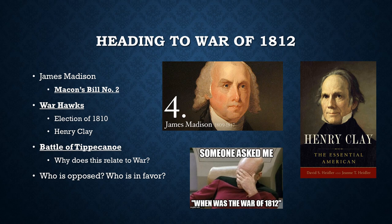Under Madison, Congress will replace the Non-Intercourse Act — which prohibited trade with Britain and France — with Macon's Bill No. 2. This reopens trade with Britain or France. Once one country promises to respect U.S. neutrality, America would then ban trade with the other. Napoleon will take advantage of this deal, saying he will respect U.S. neutrality, so the U.S. stops trading with Britain. Madison falls for it and puts an embargo on Britain, but Napoleon keeps seizing American ships — it was a trick. The U.S. leaves its embargo on Britain in place, which is really the end of U.S. neutrality, and it looks like we are heading to war.